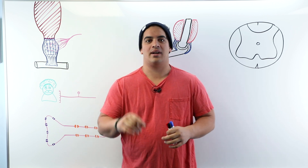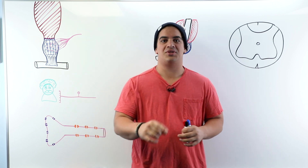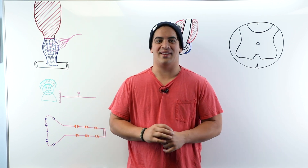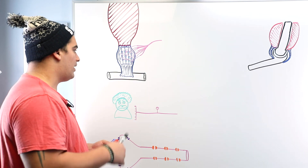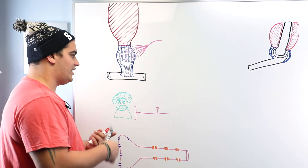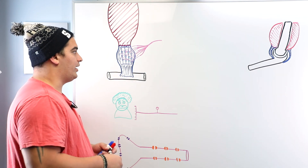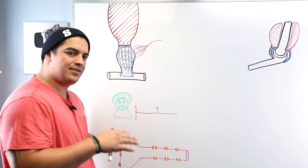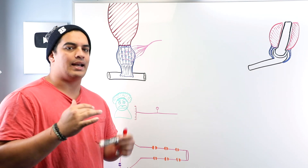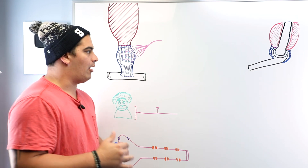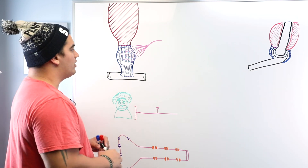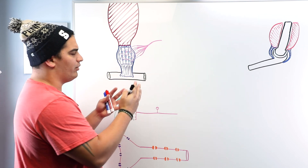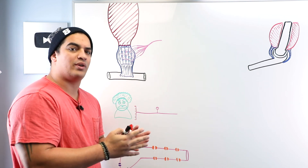Hi Ninja Nerds, in this video today we're going to talk about the Golgi Tendon Organ and the Associated Reflex. In order to do that, we need some basic anatomy down pat. We already talked about a lot of this when we discussed muscle spindles and the stretch reflex.